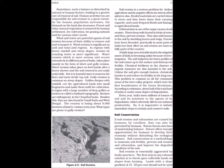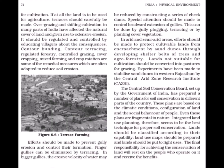Soil conservation. If soil erosion and exhaustion are caused by humans, by corollary they can also be prevented by humans. Nature has its own laws of maintaining balance and offers enough opportunities for humans to develop their economy without disturbing the ecological balance. Soil conservation is a methodology to maintain soil fertility, prevent soil erosion and exhaustion, and improve the degraded condition of the soil. Soil erosion is essentially aggravated by faulty practices. The first step in any rational solution is to check open cultivable lands on slopes from farming. Lands with a slope gradient of 15-25% should not be used for cultivation.